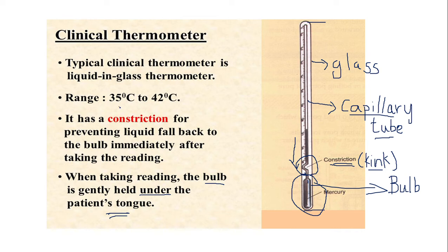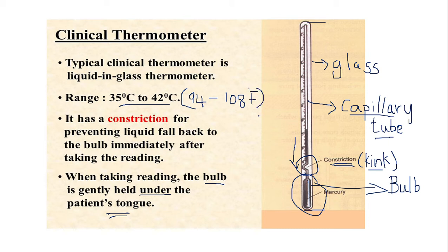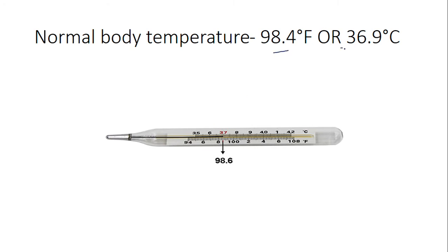The clinical thermometer is graduated between 35 to 42 degrees Celsius, and in Fahrenheit scale it is 94 to 108 degrees Fahrenheit. The normal body temperature is 36.9 degrees Celsius or 98.4 degrees Fahrenheit, with a variation of plus or minus 0.2 to 0.3 allowed.